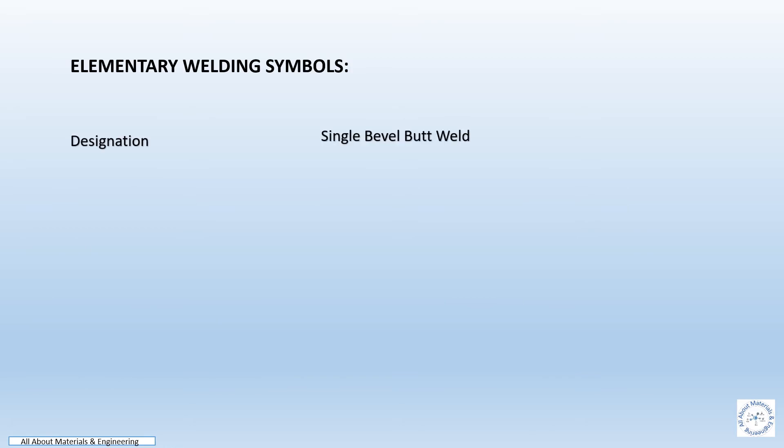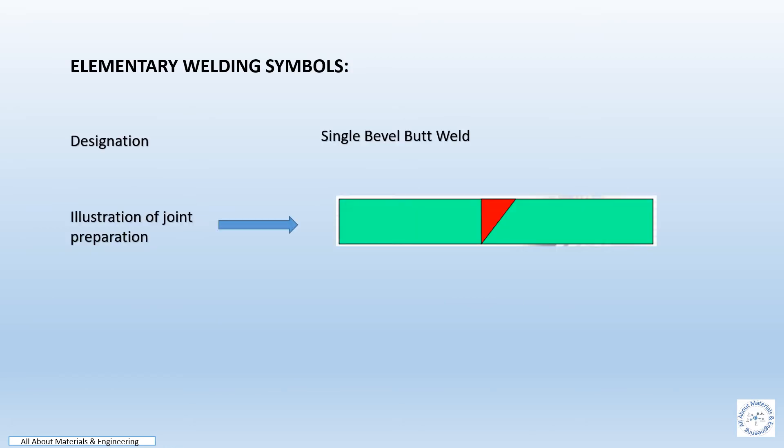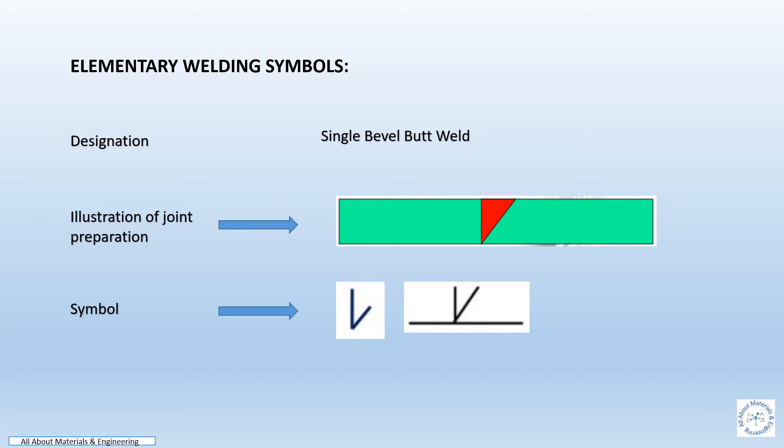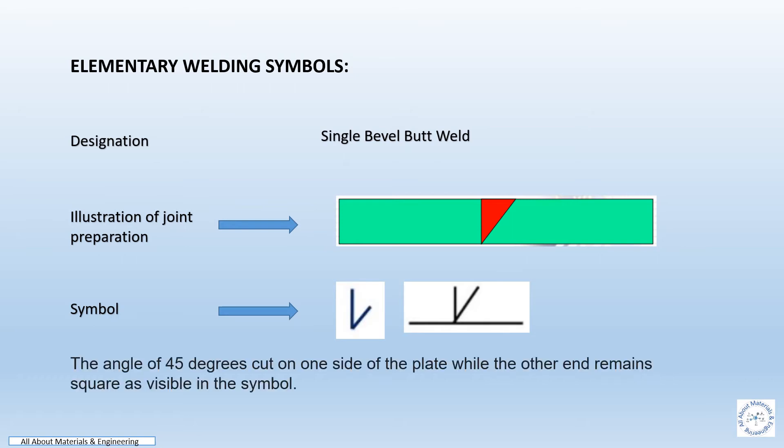Elementary welding symbol for single bevel butt weld. The sketch represents the illustration of joint preparation on the material, and the symbol will be as shown in the sketch. There is a 45 degree cut on one side of the plate while the other remains square, as visible in the symbol.